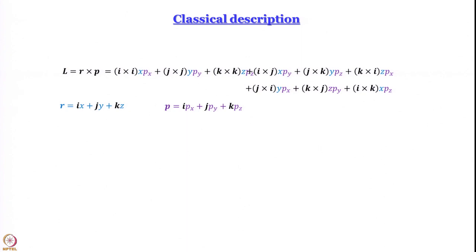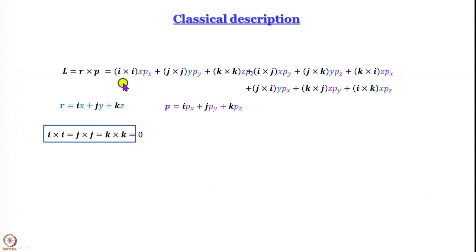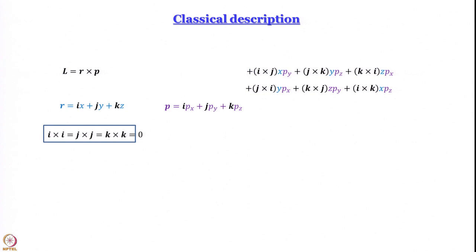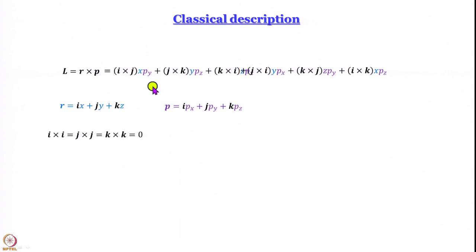Fortunately, not all 9 terms exist. The cross product of any vector with itself is zero — because sin θ = 0 when the angle between them is zero. So i×i = j×j = k×k = 0, and those first three terms vanish. We are left with 6 terms: i×j · x·p_y + j×k · y·p_z + k×i · z·p_x + j×i · y·p_x + k×j · z·p_y + i×k · x·p_z.